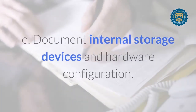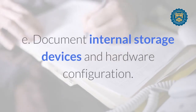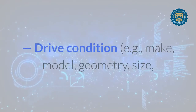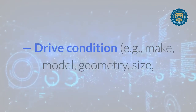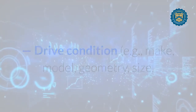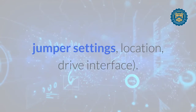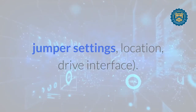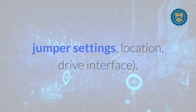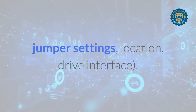E. Document internal storage devices and hardware configuration, including drive condition — e.g., make, model, geometry, size, jumper settings, location, and drive interface.